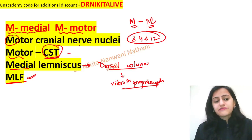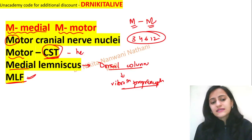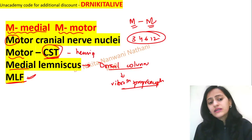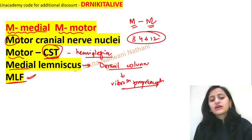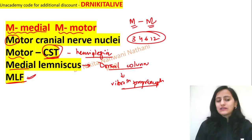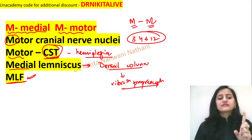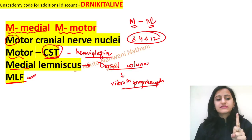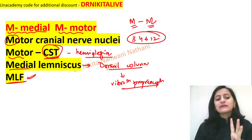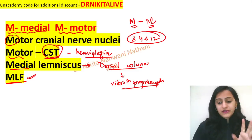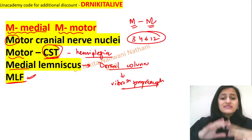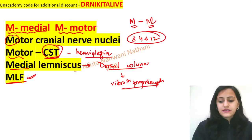The corticospinal tract causes contralateral hemiplegia when affected. So to summarize: M is medial, M is motor. What's affected? Motor cranial nerve nuclei — 3, 4, 6, 12 — the corticospinal tract, the medial lemniscus, and the MLF. In lateral medullary syndrome specifically, you will not see loss of vibration and proprioception because the medial lemniscus is medially located.